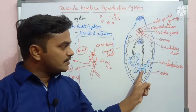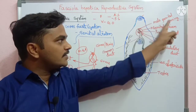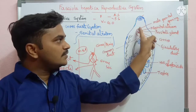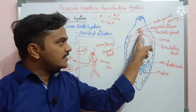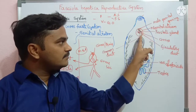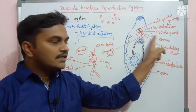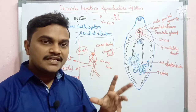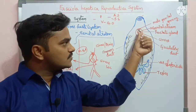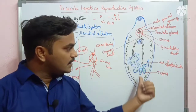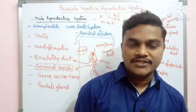The male reproductive system prepares and stores sperm. After copulation, the sperm are transmitted to another Fasciola hepatica individual. There is a prostate gland present in the genital atrium whose secretions help in sperm transfer. This concludes the male reproductive system of Fasciola hepatica.